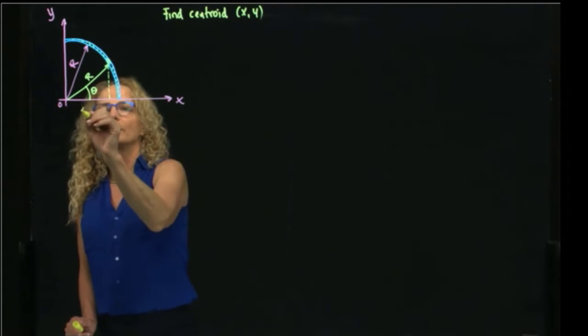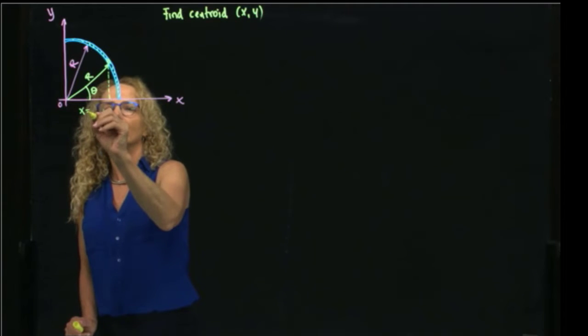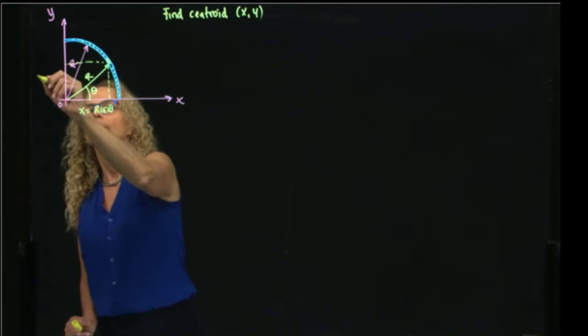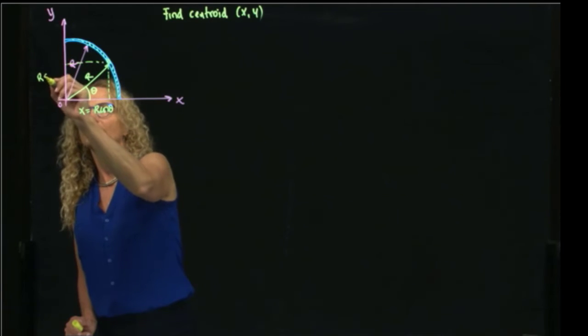Okay, so this will be X = R cosine of theta, and Y will be equal to R sine of theta, so this is Y.